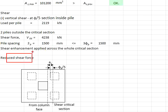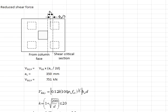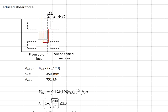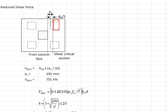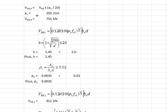We need to determine the reduced shear force. First, determine av: the width of the pile caps is 2.3 meters, half of which is 1.15 meters, minus half of the column size, minus the cover of 150 mm, and minus four-fifths of the pile size. That gives av. The value d is the smaller effective depth of the reinforcement bar, giving a reduced shear load of 751 kilonewtons.